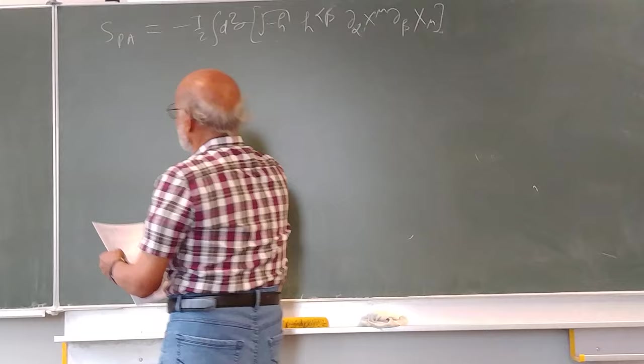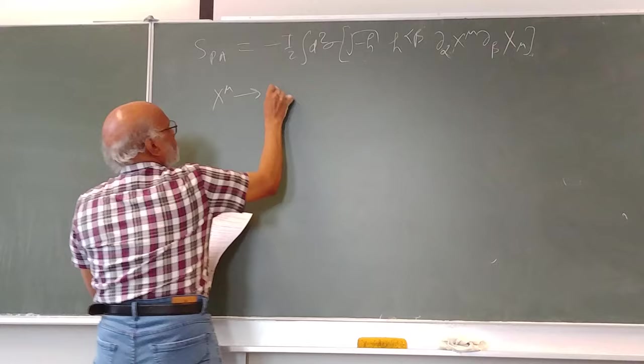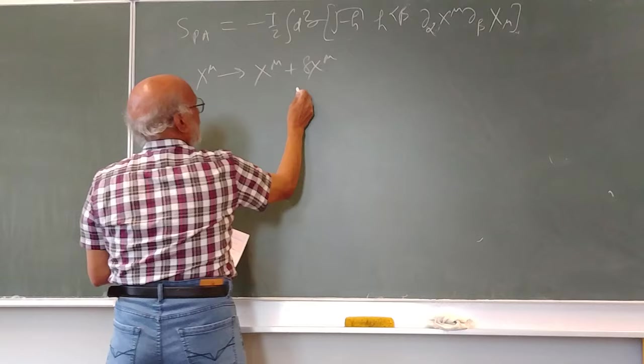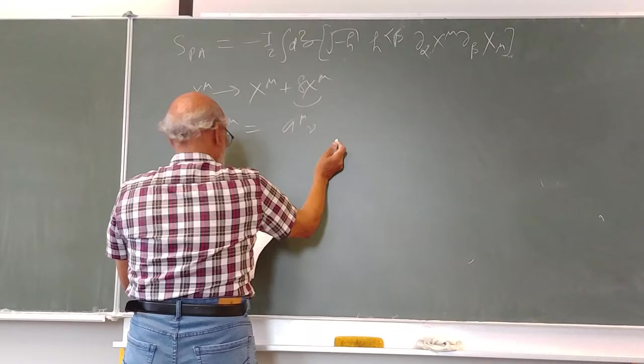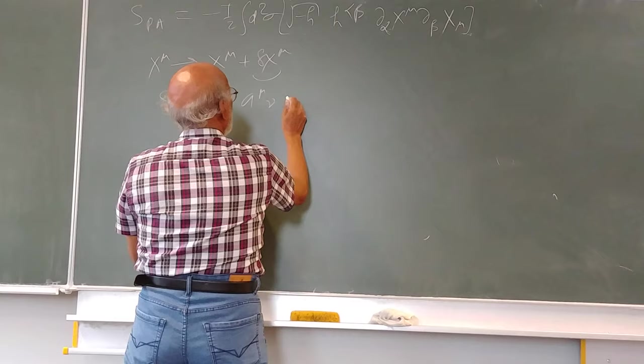What are the global symmetries? They would be under the space-time translation. So x^μ goes to x^μ plus δx^μ. For example, here this δx^μ could be a_μν x^μ.